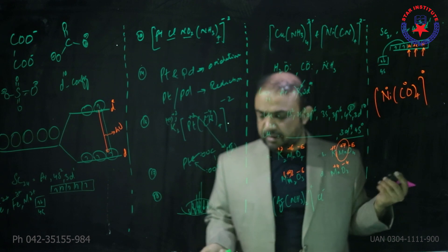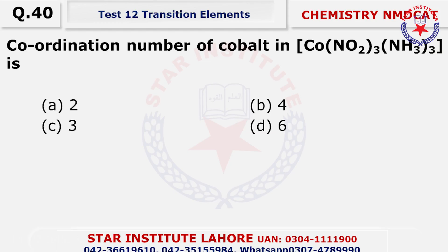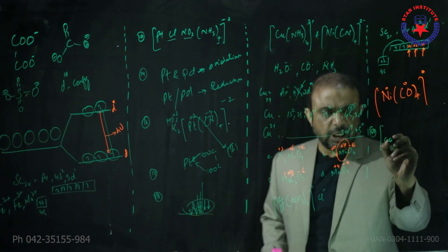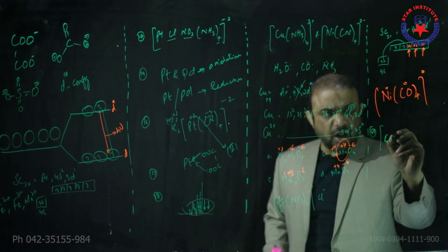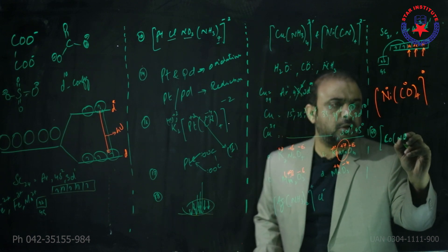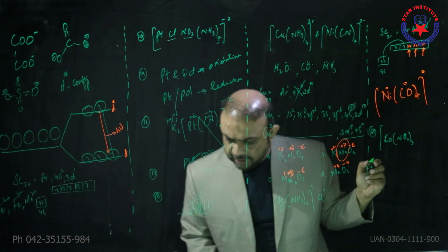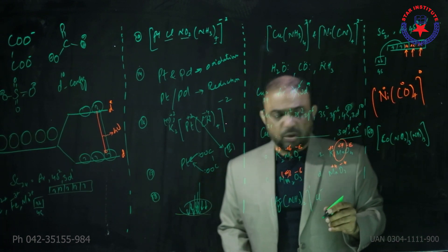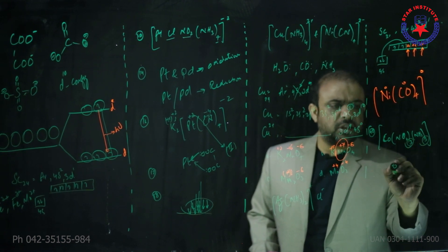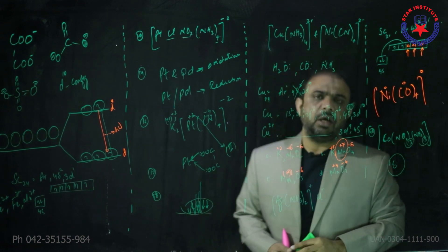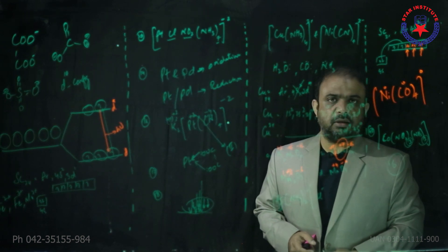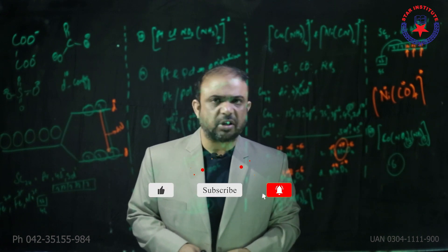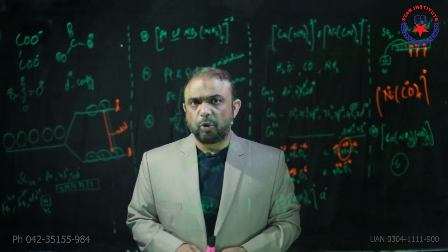Question number forty: the coordination number of cobalt — the complex is [Co(NO2)3(NH3)3]. The coordination number is the number of ligands attached: three plus three equals six ligands are attached, and the geometry should be octahedral, so the choice is charlie — six. Thank you very much, I hope you enjoyed this discussion. Do like, share, subscribe to my channel and press the bell icon so that notifications reach you on time. Thank you.